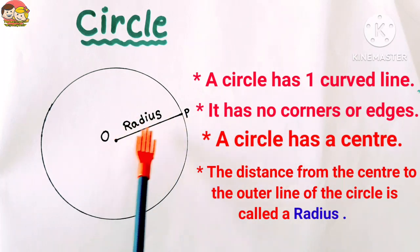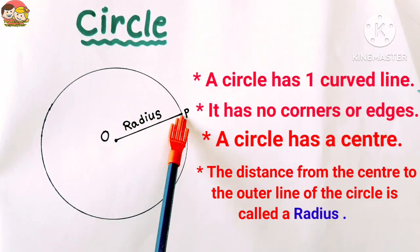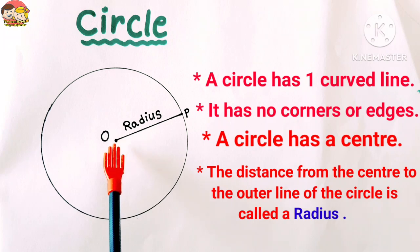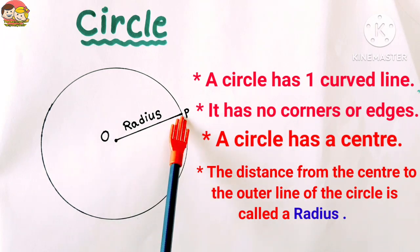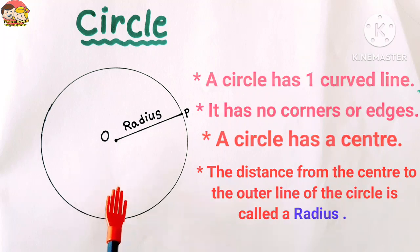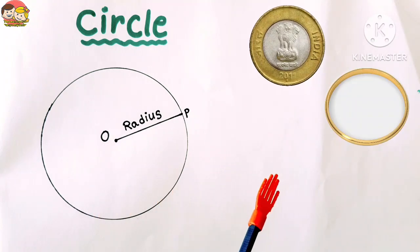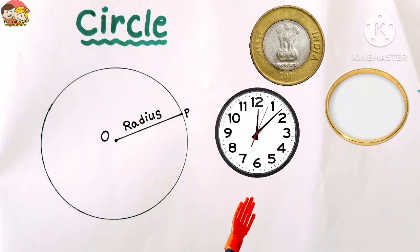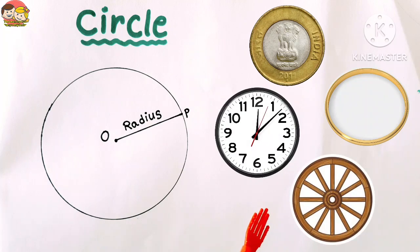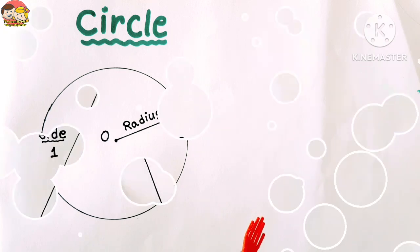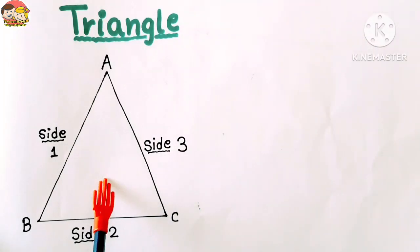Now look here, the distance from the center to the outer line of the circle is called radius. OP is the radius here. Examples of circles are coins, clocks, walls, etc. These all are circular shapes.